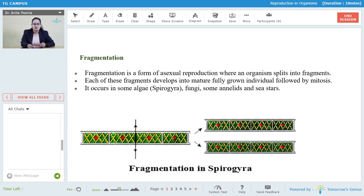In this, as you all can see, is a form of asexual production wherein organism is splitting into fragments and each of the fragments develop into mature fully grown individual which is followed by mitosis. It occurs in some algae like spirogyra, some of the fungi, some annelids and some sea stars as well.